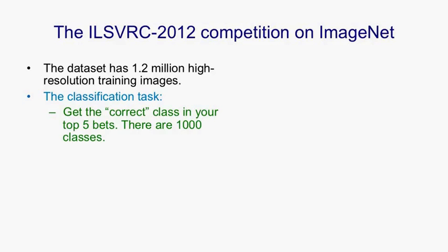To make the task feasible, the computer vision system is allowed to make five bets, and it's said to get it right if one of those bets corresponds to the label that a person has given the image.